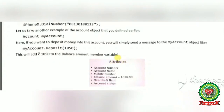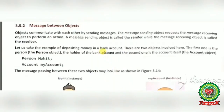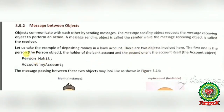This is how a class sends a message to an object, and the object sends the message to its member method. Next, message between objects: objects communicate with each other by sending messages. The message-sending object requests the message-receiving object to perform an action. For example, depositing money in a bank account involves two objects — the person object (the account holder) and the account object.